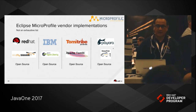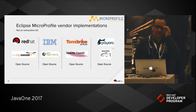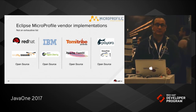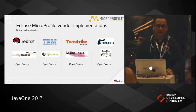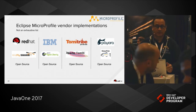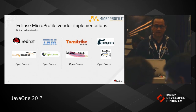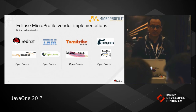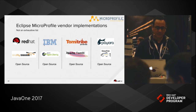There are many vendor implementations for MicroProfile. On this chart, you can see that Red Hat uses WildFly Swarm to implement MicroProfile, which is an open source project. In fact, they're all open source projects on this page. IBM uses OpenLiberty, Tomitribe uses Apache TomEE, and Payara uses GlassFish to implement MicroProfile.